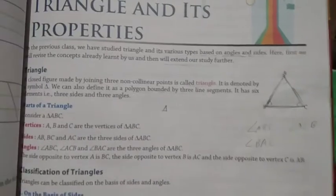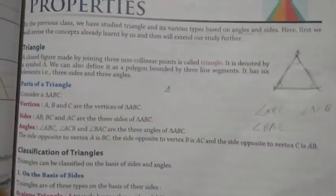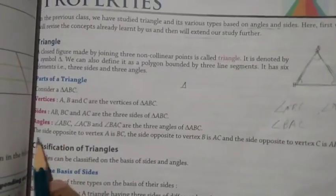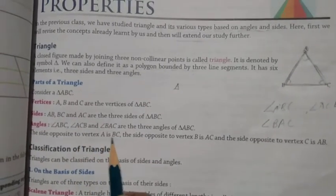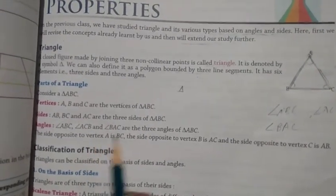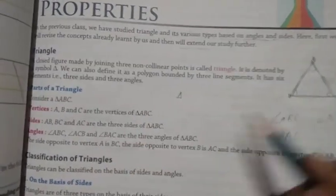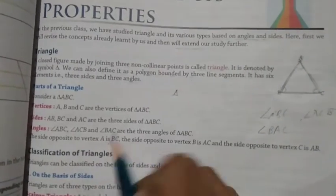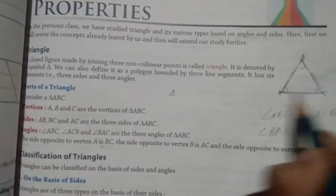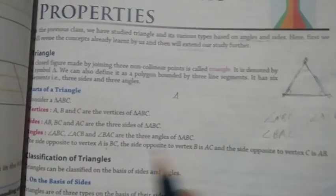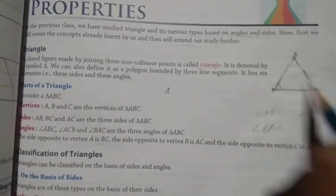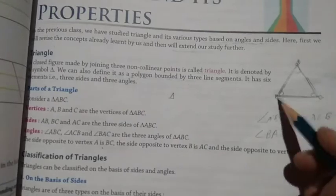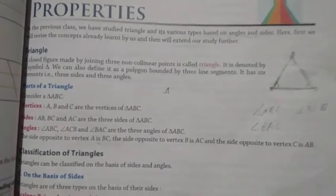The side opposite to vertex A is BC. The side opposite to vertex B is AC. And the side opposite to vertex C is AB. You have already studied all of this before.